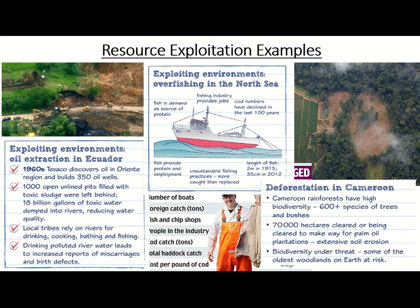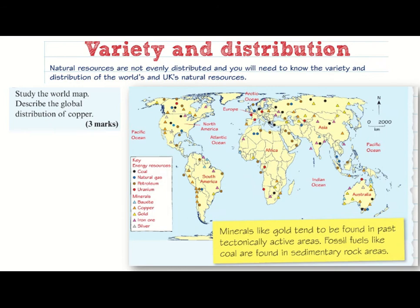The third example is deforestation in Cameroon. Deforesting that area puts 600-plus species of tree at risk, which has a knock-on effect on all the animals living in those trees. The reason for deforesting areas of Cameroon is largely to plant palm oil plantations, which are a very profitable crop. Palm oil is found in many products including certain shampoo brands and food products. These are three key examples of over-exploiting natural resources: oil extraction in Ecuador, North Sea overfishing, and deforestation in Cameroon.